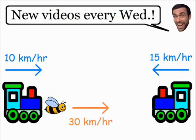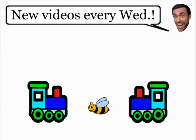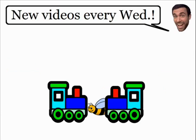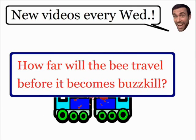At this moment the distance between the two trains is 150 kilometers, and the bee is going to travel back and forth between the two trains until they collide and the bee becomes Buzzkill. The question for this Brain Teaser is: how far will the bee travel before it becomes Buzzkill?